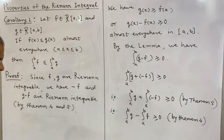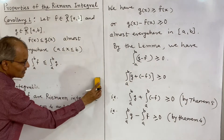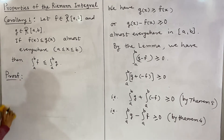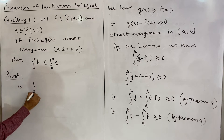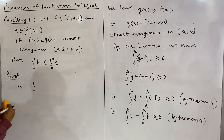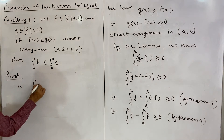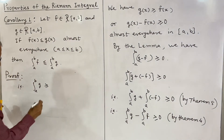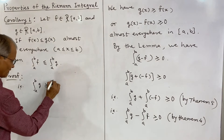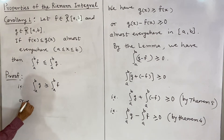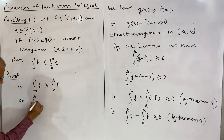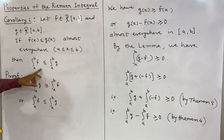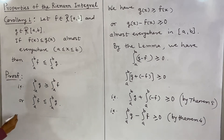Using these earlier properties, we get that the integral from a to b of g is greater than or equal to the integral from a to b of f, or equivalently the integral of f is less than or equal to the integral of g. This is what we wanted to prove, and this proves the corollary.